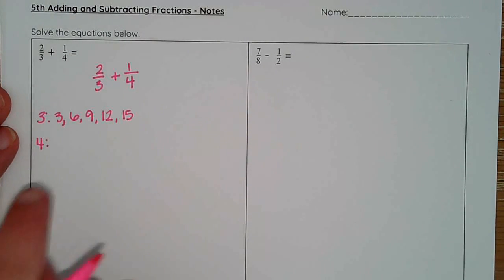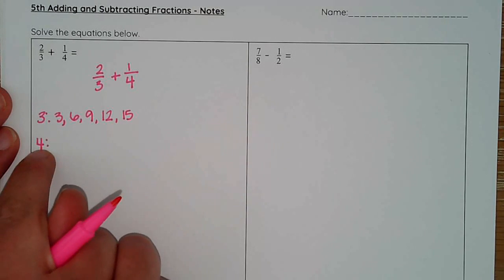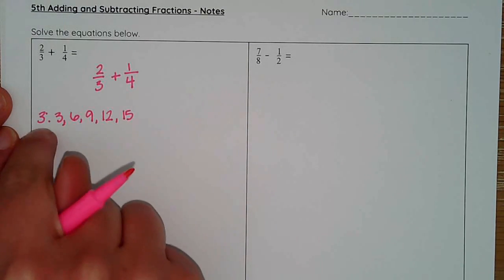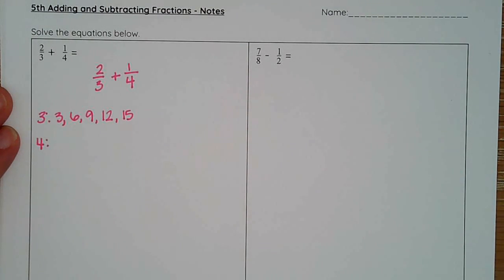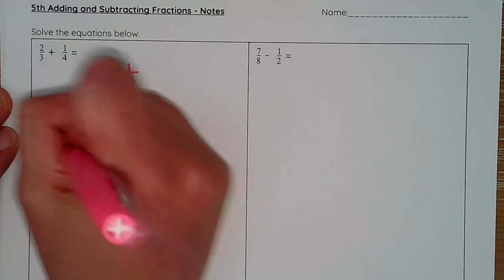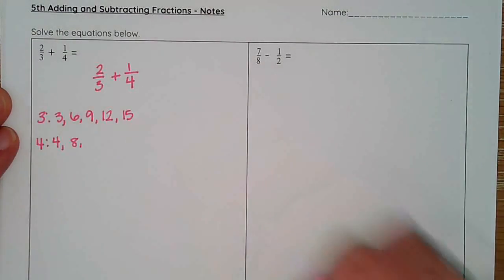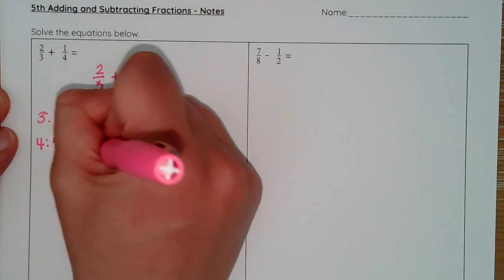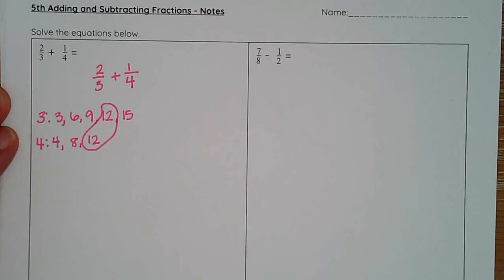Then I move to my four, and my goal here is to find a number in my multiples of four and my multiples of three that match. So I go four times one is four, four times two is eight, four times three is twelve. And right there I have my match. Both of these can evenly go into twelve.